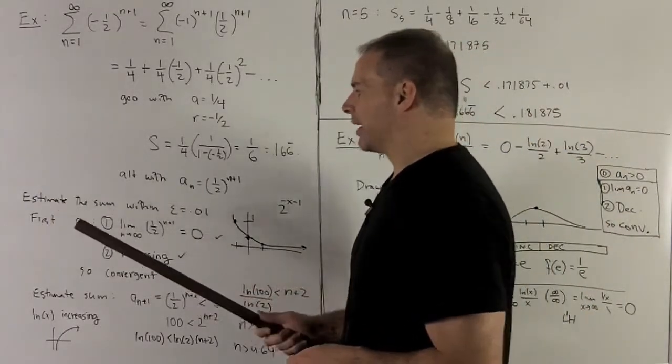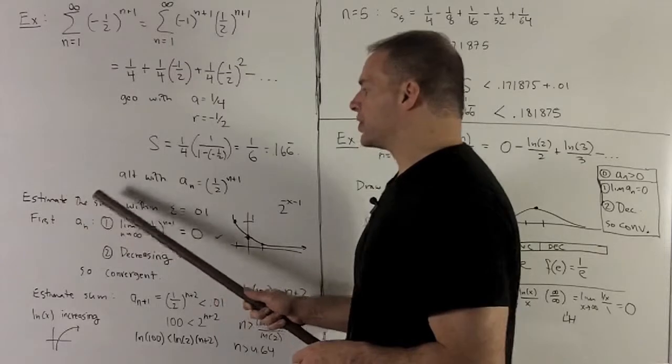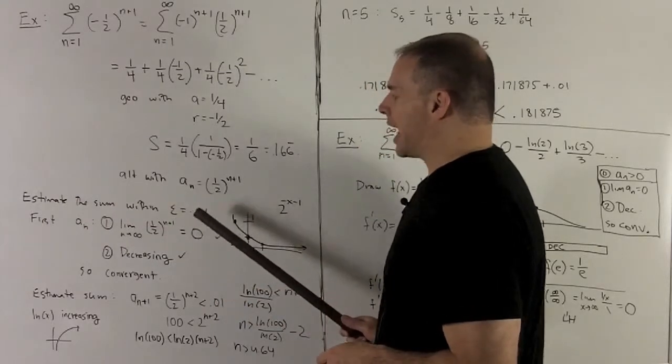So the question we can ask is, let's say, for instance, estimate the sum within epsilon equal to .01.